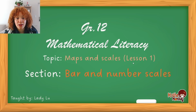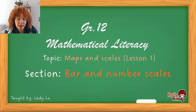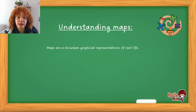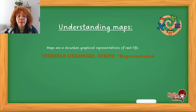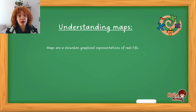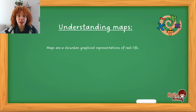This is the first lesson on maps and scales and I'm going to be focusing on bar scales and number scales with regards to maps. Let's start right at the beginning. Maps are shrunken graphical representations of real life. There are essentially three things that go with maps: you have the actual drawing which is your map, then you have the real life place the map is representing, and then you have the scale.